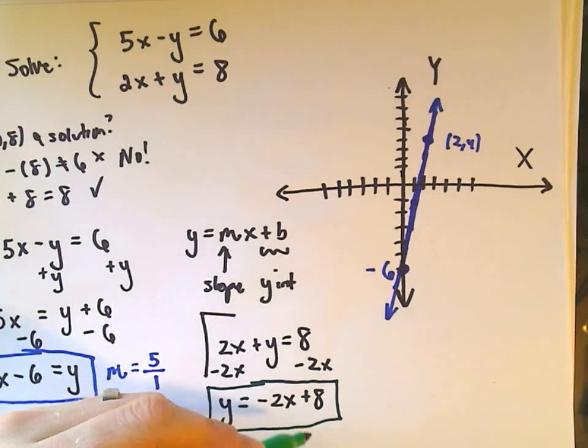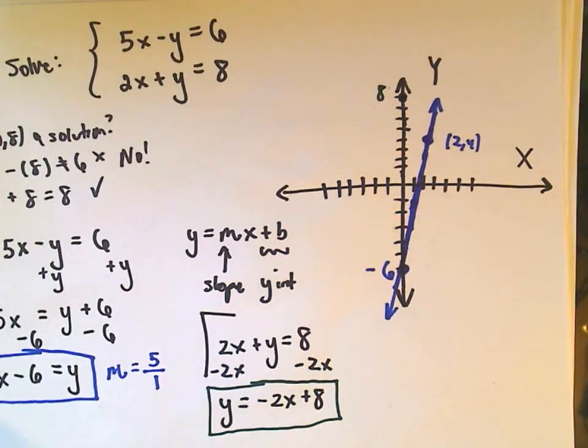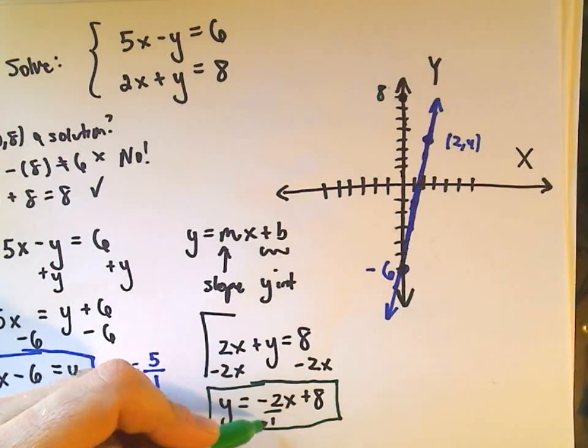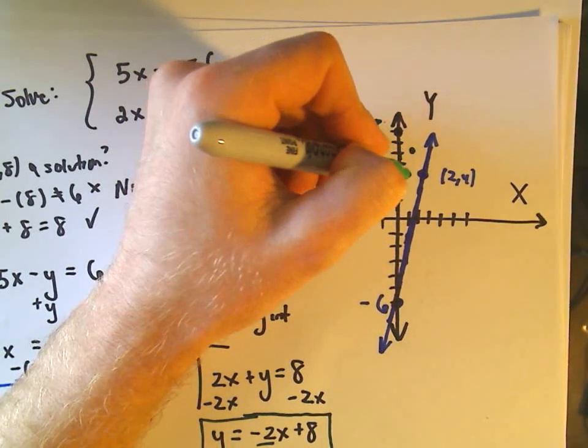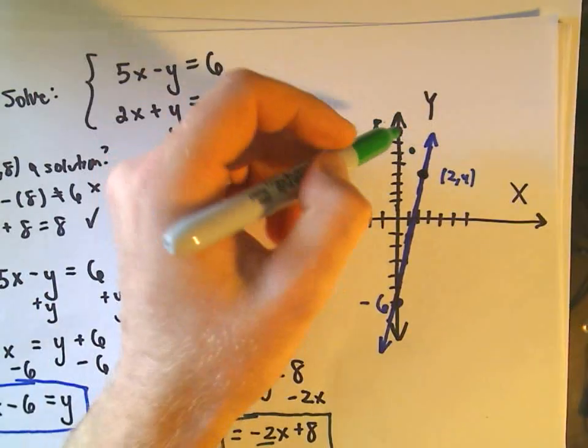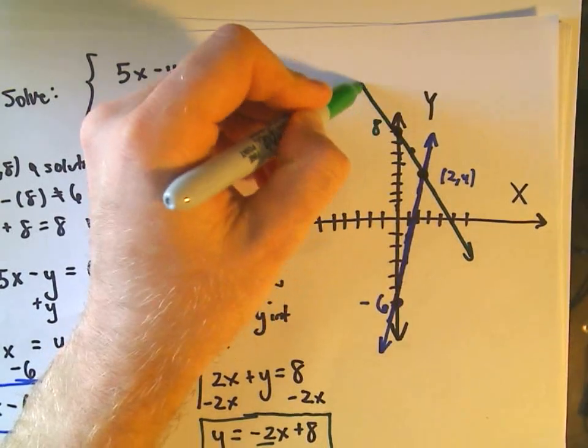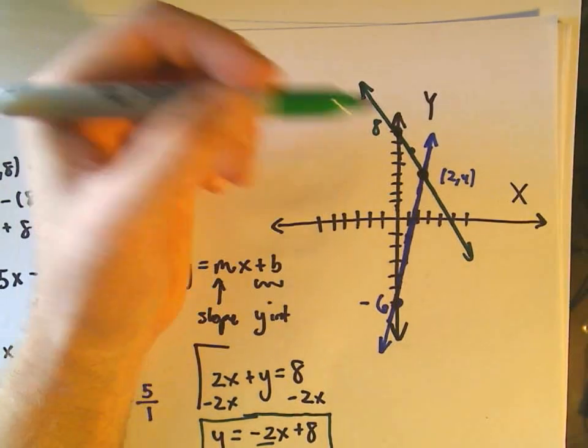So that's going to be our other line. So again, this says it has a y intercept positive 8. And then it says the slope is negative 2 over 1, so we simply go down 2 units to the right 1 unit. So down 2 over 1, down 2 over 1. And hey, notice if you go down 2 over 1, my second equation also goes through this point 2, 4.